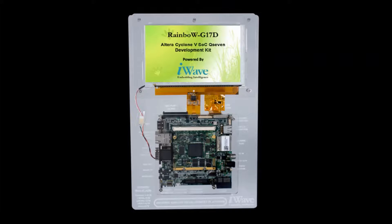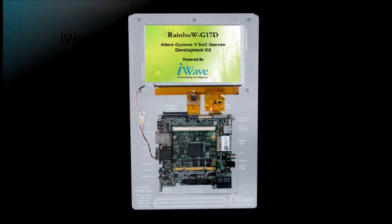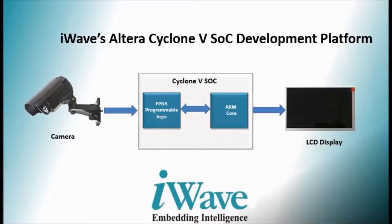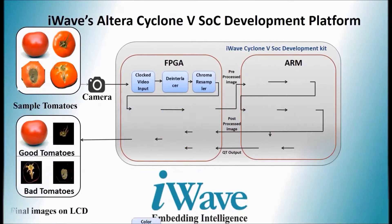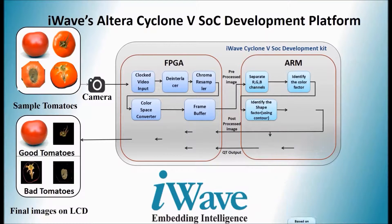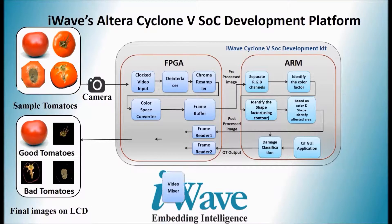Machine vision is the technology to replace manual inspections with low-cost computer vision with cameras. The technology is used in industrial automation to increase and improve production and its quality. We have developed a machine vision application using the OpenCV image processing library for sorting of tomatoes.